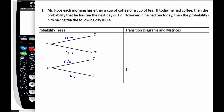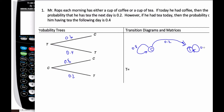Now I'm going to take the same information and make what's called a transition diagram. I start with coffee and I also have tea. From coffee, if I had coffee today, the probability of transitioning to tea — notice there's an arrow on the end — is 0.2. But if I have coffee and return back to coffee, that's 0.8. If I had tea today, then the probability of having tea the following day — going back to tea — is 0.4. And the probability of going back to coffee is 0.6. This diagram with arrows indicating direction is called a transition diagram.